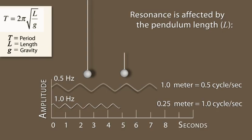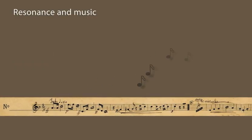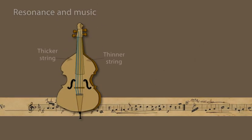Resonant systems can be used to generate vibrations of a specific frequency to create music. Strings under tension, such as with this cello, have resonant frequencies directly related to the material of the string.